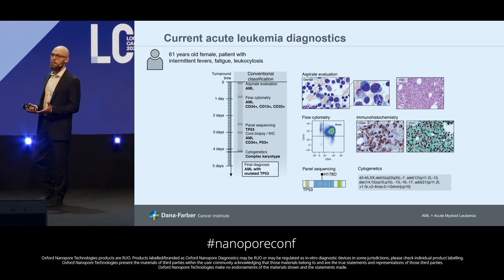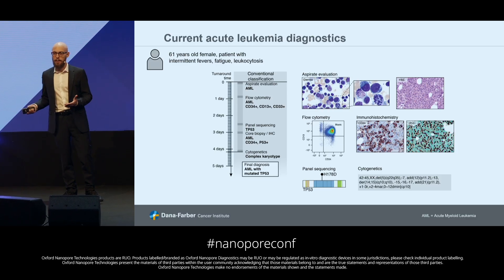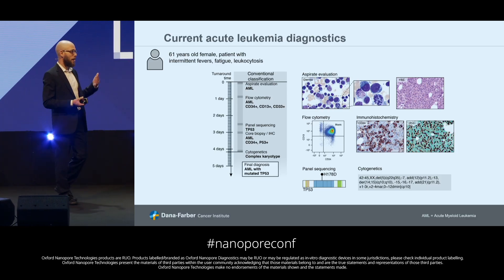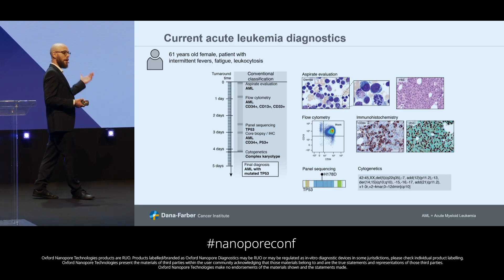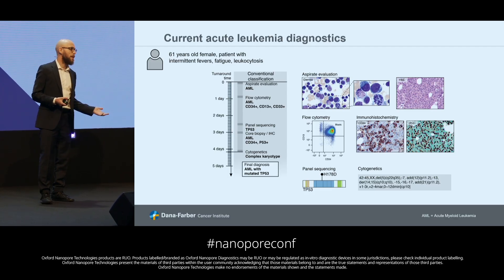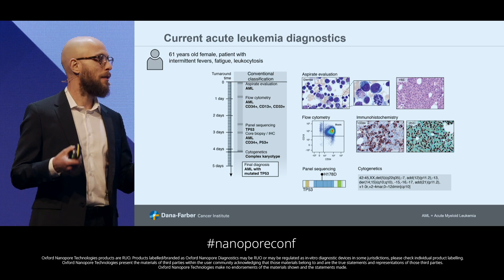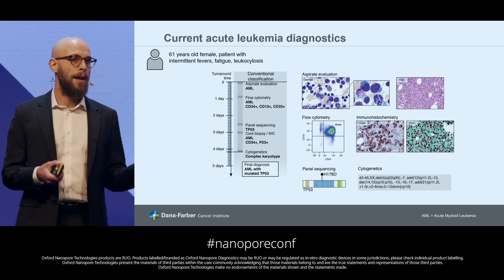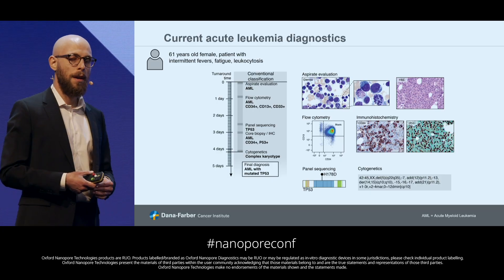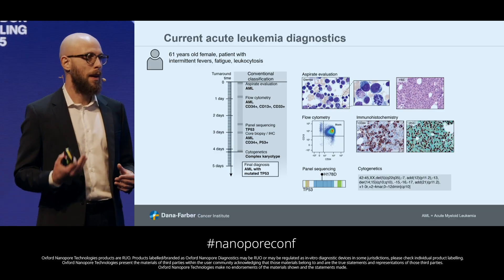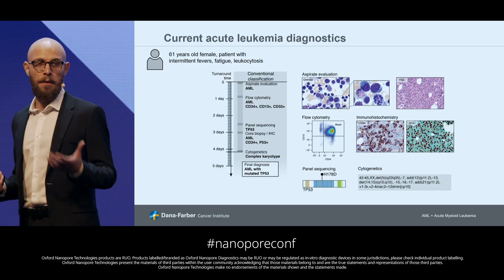Currently, to arrive at an accurate diagnosis, multiple tests need to be run in parallel, requiring different expertise and technologies. In this example, from sample collection, there was aspirate evaluation, then flow cytometry, panel sequencing, immunohistochemistry, and karyotyping. After four days, the doctor arrived at a final diagnosis of acute myeloid leukemia with mutated TP53. We think this process is time- and resource-intensive, and it does not capture the full heterogeneity of this disease.